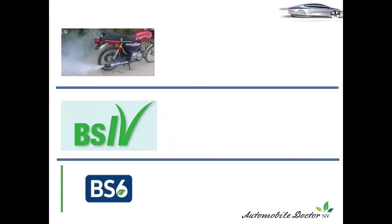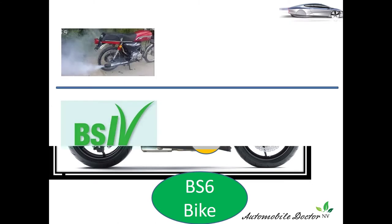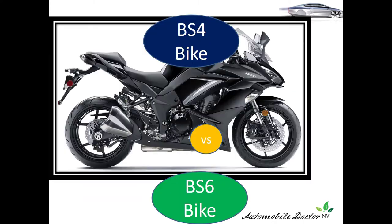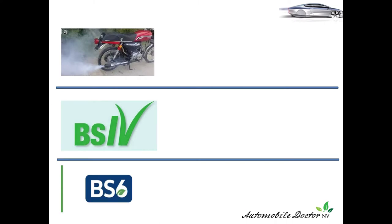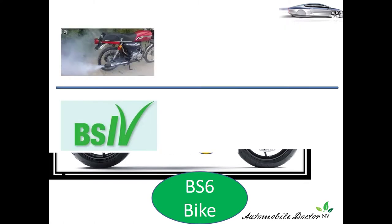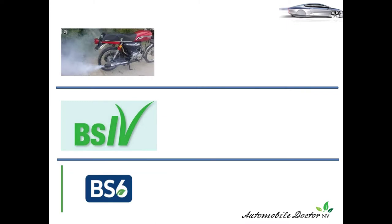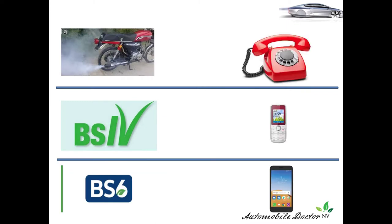Old Yamaha bikes like the RX100 emit lots of smoke — we have seen many things. To understand why emission norms like BS6 and BS4 come in, and why fuel injection comes in, we will compare this with mobile phones. Earlier bikes emit a lot of smoke; in recent years this has been eliminated by emission norms. Bharat Stage 4, Bharat Stage 6 — these are all emission norms. If you see, the smoke keeps reducing as you go to BS6.